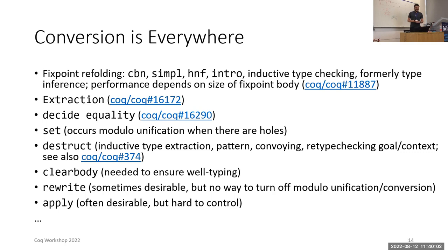Extraction until Coq 8.16 fully reduced types for no particularly good reason. Decide quality still fully reduces types in some cases for no particularly good reason. Set occurs modular unification when there are holes, but not when there are no holes. Destruct does more conversion than you might think. Clear body requires conversion to ensure well-typedness. Rewrite does conversion and unification. This is sometimes desirable, the problem is that there is no way to fully turn it off. Similarly apply does conversion. Again this is often desirable but it is hard to control. Fixing performance issues from one tactic often just reveals performance issues from the next tactic.